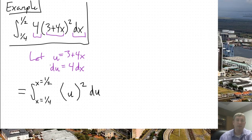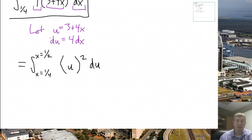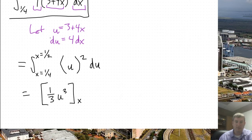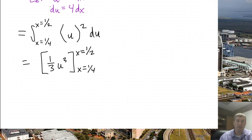Now, we can do this very simply. We can just integrate to get u squared becomes 1/3 u cubed. And we keep the bounds of integration, x equals 1/4 to x equals 1/2. Now, these are x values. We cannot plug these in for u. So we'll have to substitute back. We'll substitute back the u equals 3 plus 4x.